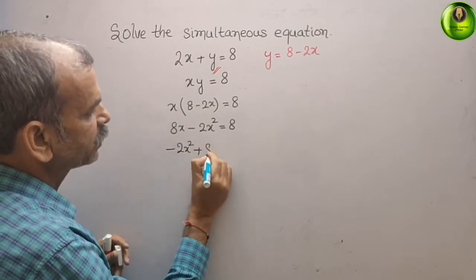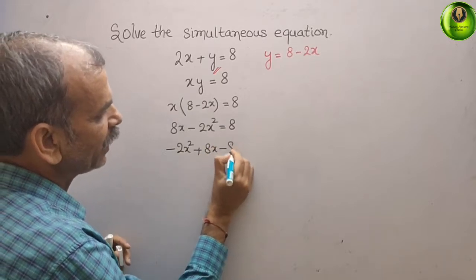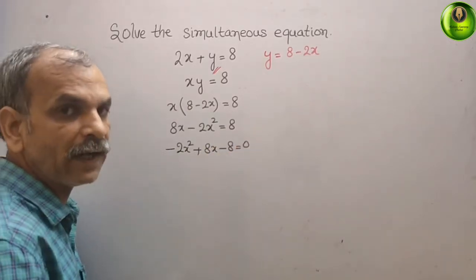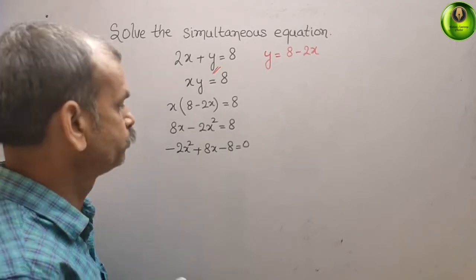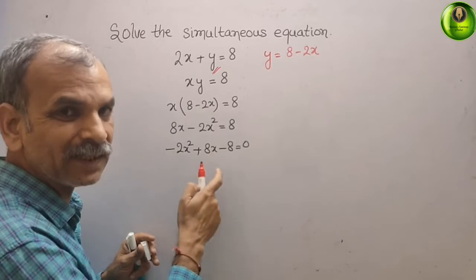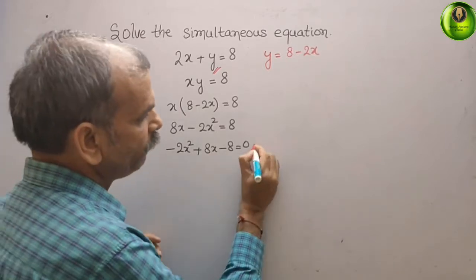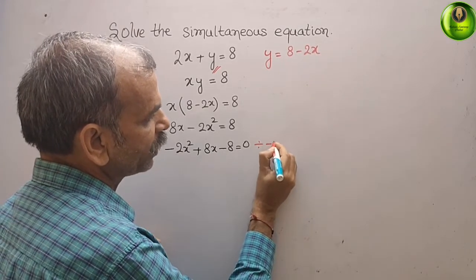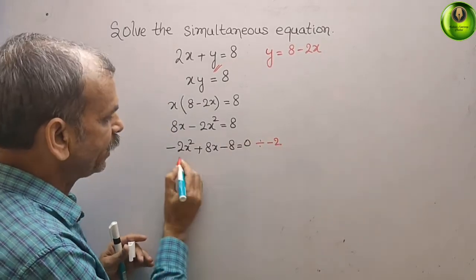Plus 8x minus 8, that gives you 0. Now divide it by minus 2. Every term is even, so we will divide by minus 2. What we will get?